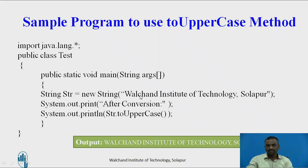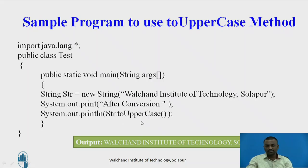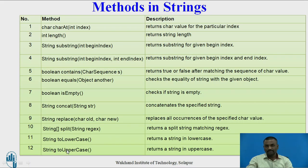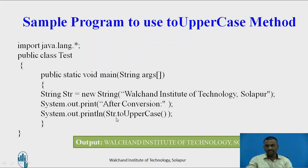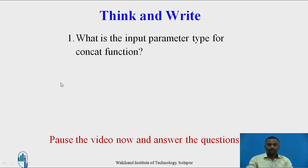Let's see a sample program. There is a class called Test. Inside Test, I am writing: String str = new String("Valchand Institute of Technology, Solapur"). So str holds that value. If I want to convert this to uppercase, instead of writing logic for each character, I can directly call the string method str.toUpperCase(). toUpperCase returns a string — it converts the content to uppercase and returns it. The output will show the full name in capital letters. This is how ready-made string methods are very helpful.